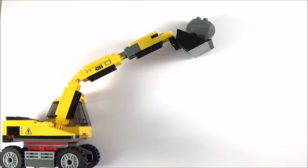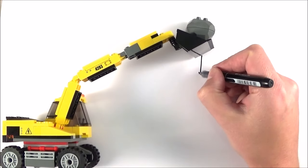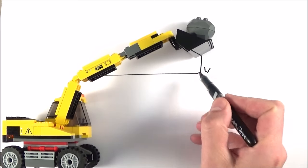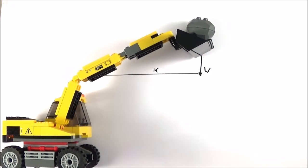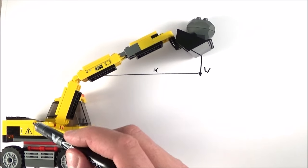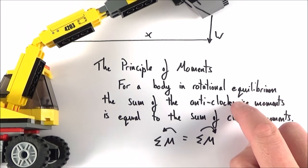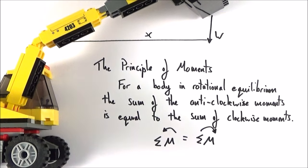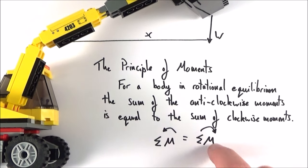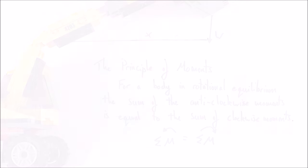Just because there's a large moment acting on something doesn't mean it's rotating. For example, a heavy boulder may exert a large moment on a digger at a certain distance from the pivot, but the digger might not tip over because there's another moment on the other side — the weight of the digger acting at a smaller distance. This is the principle of moments: for a body in rotational equilibrium, the sum of the anticlockwise moments equals the sum of the clockwise moments, so the body does not rotate.